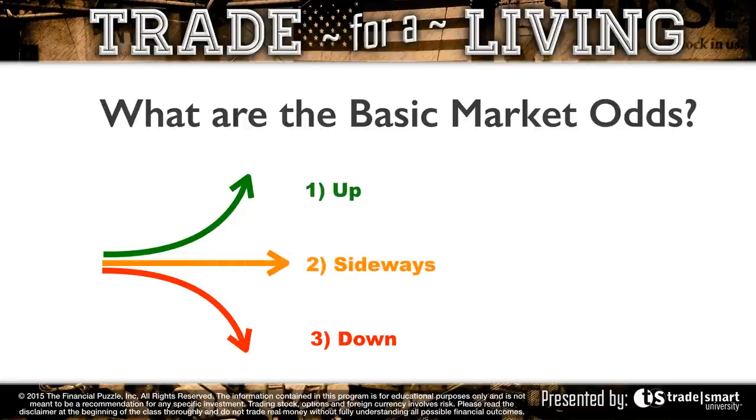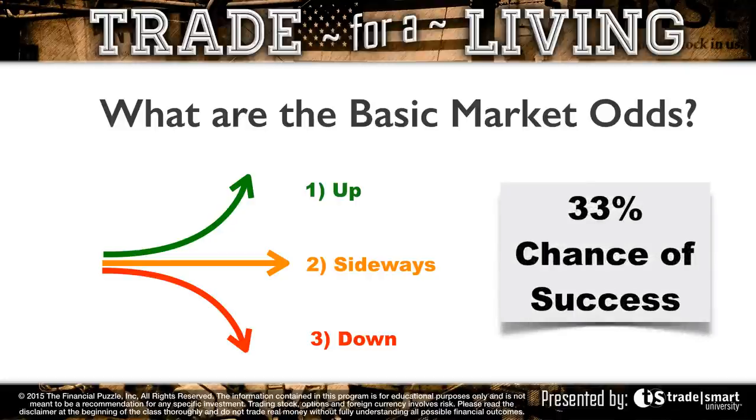So out of these three directions, what are the odds if you go out and buy a stock, what are the odds that the trade's going to go up? Or if you go out and short a stock, what are the odds that the trade's going to go down? Well, in both cases, the odds are 33%. So you got a 33% chance of success, just generally speaking. What that's telling us is by a margin of 2%, average retail traders are actually beating basic market odds.